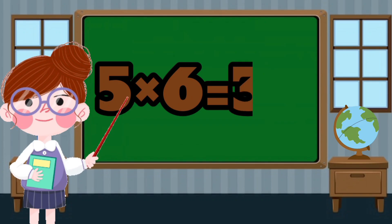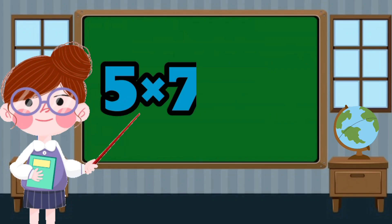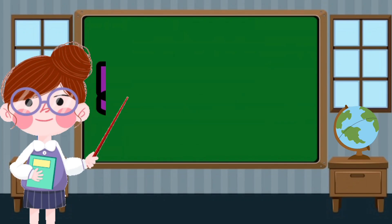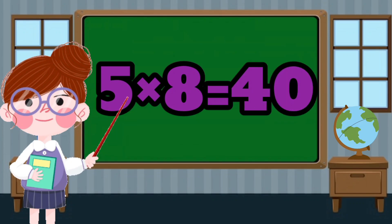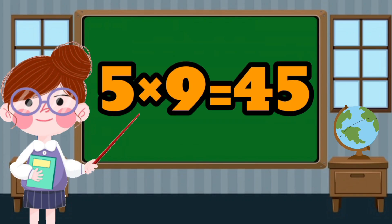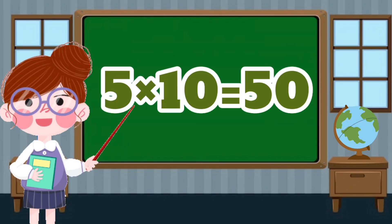5 x 6 equals 30. 5 x 7 equals 35. 5 x 8 equals 40. 5 x 9 equals 45. 5 x 10 equals 50.